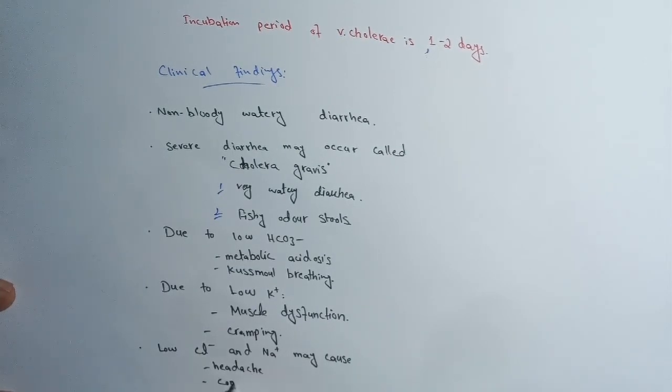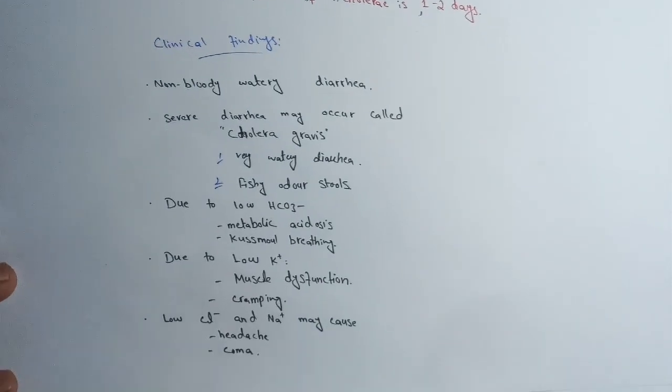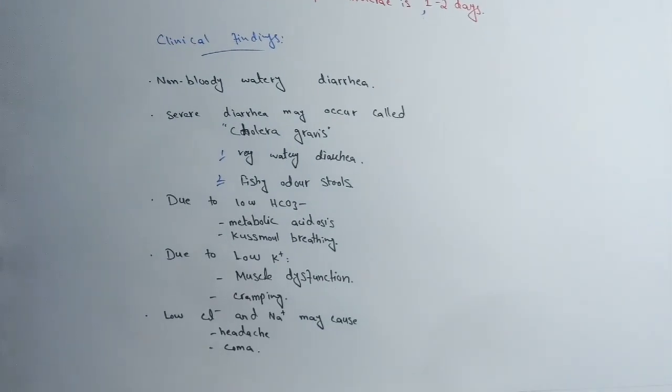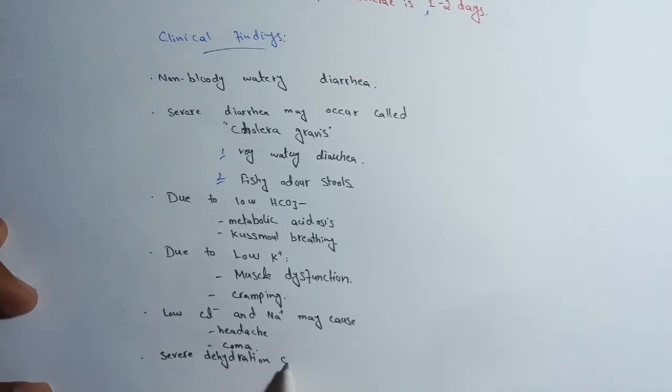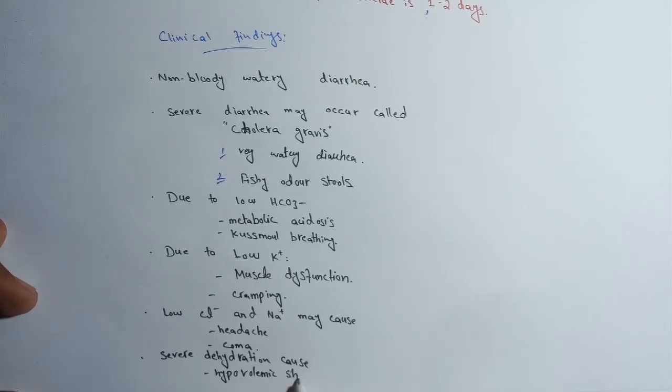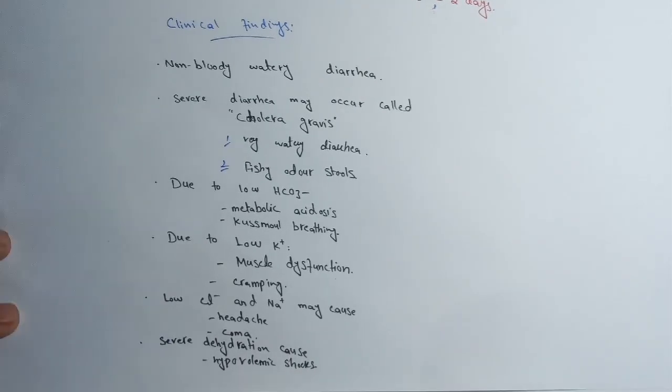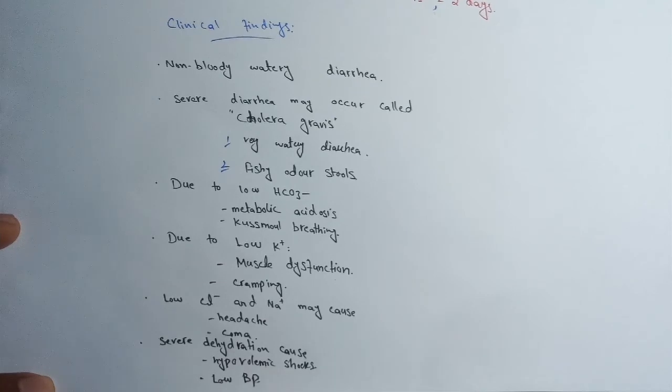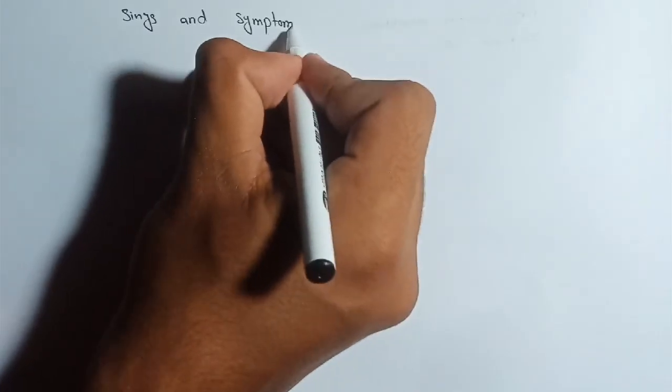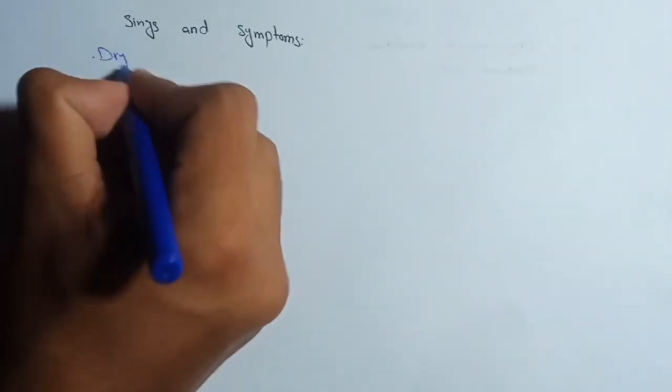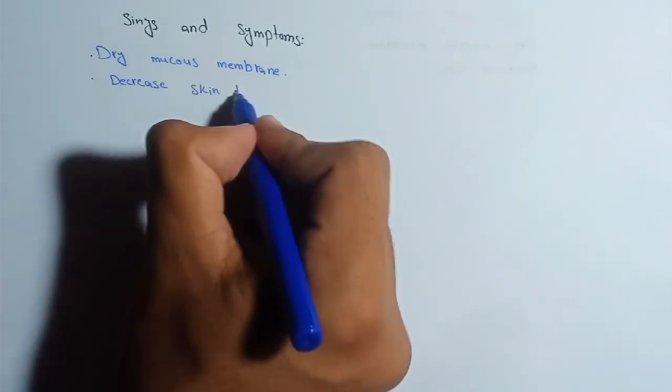Due to low potassium ions, muscle dysfunction and cramping can also be there in cholera. Due to low chloride and sodium ions, headache and coma will be there. As in cholera there will be high dehydration, severe dehydration can lead to hypovolemic shock and low blood pressure. These are some clinical findings of cholera.